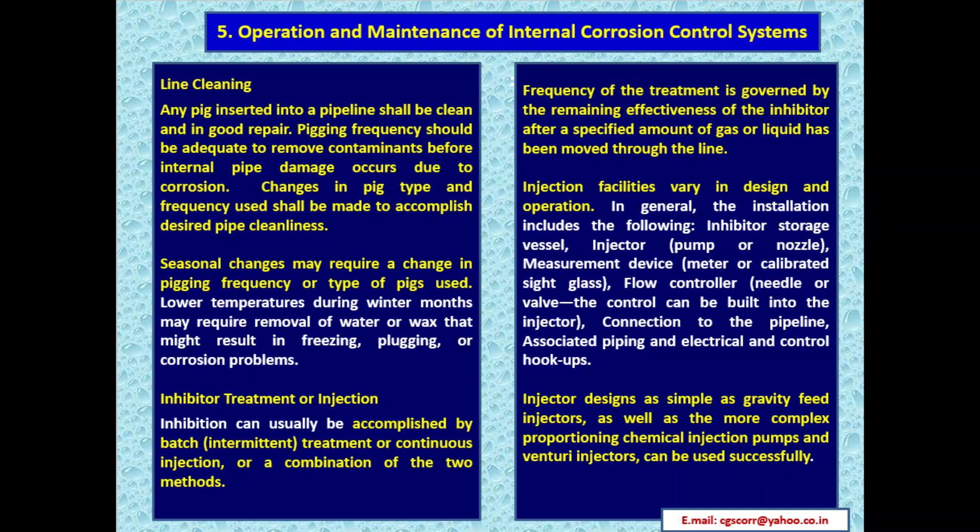Operation and maintenance of internal corrosion control systems — line cleaning: any pig inserted into a pipeline shall be clean and in good repair. Pigging frequency should be adequate to remove contaminants before internal pipe damage occurs due to corrosion. Changes in pig type and frequency shall be made to accomplish desired pipe cleanliness. Seasonal changes may require a change in pigging frequency or type. Lower temperatures during winter months may require removal of water or wax that might result in freezing, plugging, or corrosion problems.